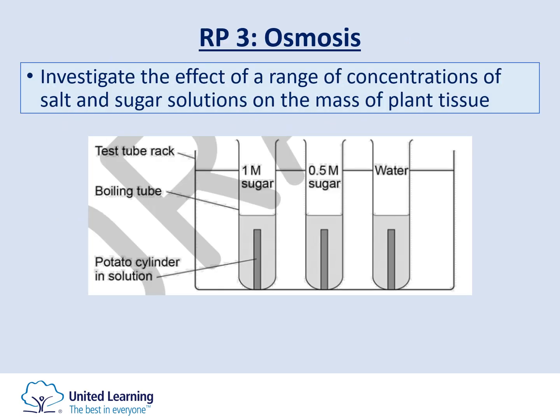The next required practical is osmosis, where we investigate the effect of a range of salt and sugar solution concentrations on the mass of a plant tissue. We use a potato, though a carrot or dialysis visking tubing can also be used in exam questions. All three provide a semi-permeable membrane, which is ideal for the movement of water from high concentration to low concentration in osmosis.